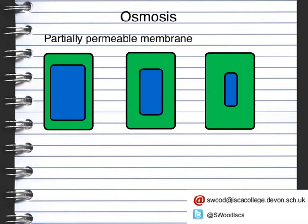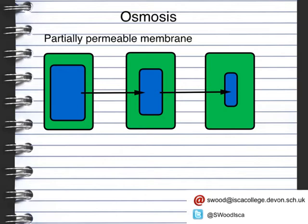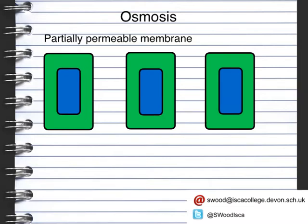Here we have three cells. The first cell has a high concentration of water in its vacuole, so via osmosis that water will move to the next cell. Again, the second cell has a higher concentration of water than the third, so we get continued movement of water. Eventually you end up with three cells where all cells have the same concentration of water in each of their vacuoles. There may be occasional movement back, but the net movement results in equal water concentration across all cells.